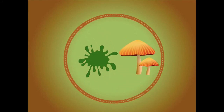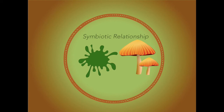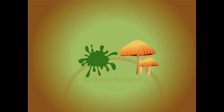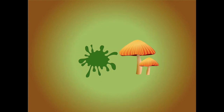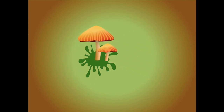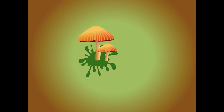It's kind of like marriage — called a symbiotic relationship. Actually, it's really not like marriage. It's more like the fungi kidnaps the algae or cyanobacteria, forcing them to grow into each other and scabs off the nutrients that the algae is creating.